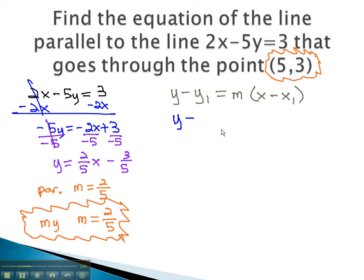Plugging in what we know, y minus y1, the point we're given is 3, equals m, a slope of 2 fifths, times x minus x1, which we were given as 5.